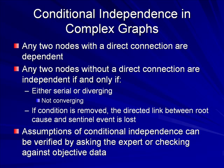Once conditional independencies have been identified, the assumptions can be verified by examining data or by querying experts. If data is available in a serial structure, the correlation between root cause and sentinel event should equal the correlation between root cause and direct cause multiplied by the correlation between direct cause and sentinel event. In a diverging structure, a similar relationship should hold — the correlation between the two effects should equal the multiplication of the correlation between the cause and each effect.